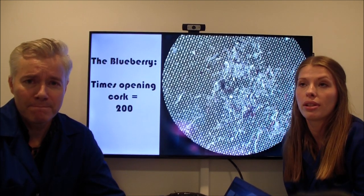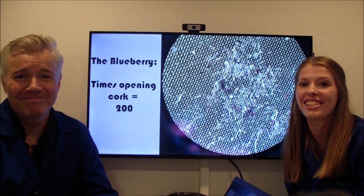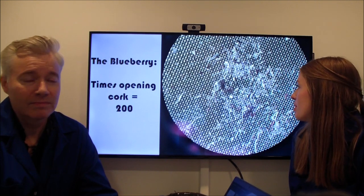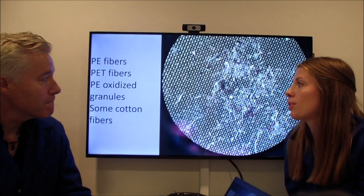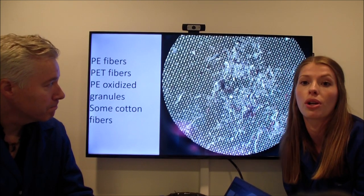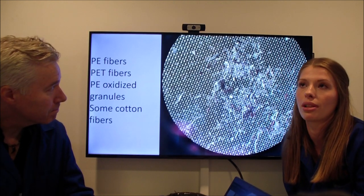And this is the blueberry sample, which we opened and closed 200 times, and you can clearly see an increase in the amount of particles. We found lots of different fibers, which you can see here: polyethylene, PET fibers and polyethylene granulates, and also some cotton fibers.